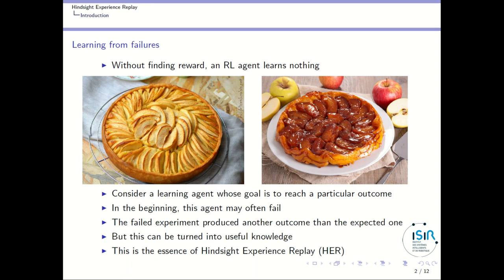Reinforcement learning agents can only learn from their success when they find some reward. They may learn from failures in the case of negative rewards, but if the only reward signal is positive, then an agent that has not found this positive reward signal won't learn anything.